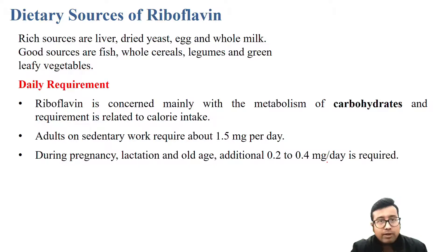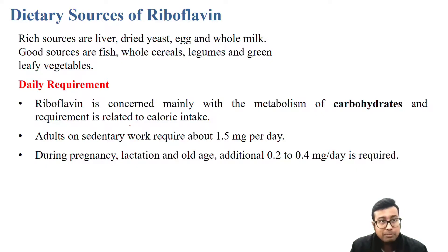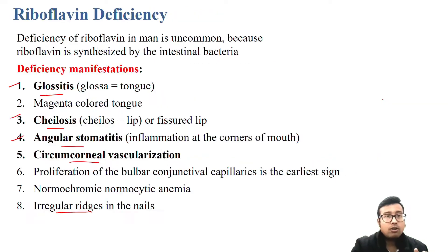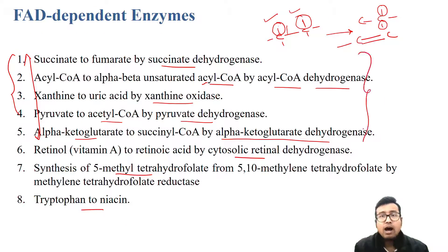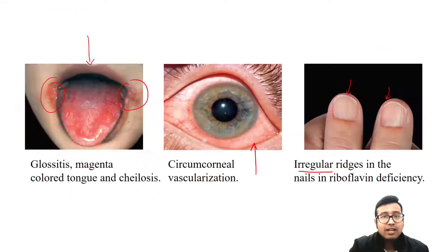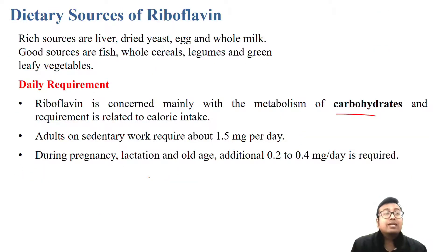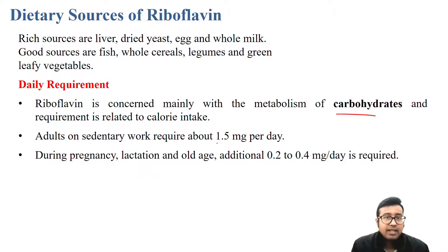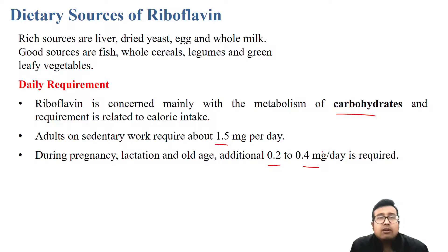Dietary sources of riboflavin include meat, fish, egg, liver, whole grains, legumes, and vegetables — essentially all common foods contain riboflavin. It is mainly concerned with carbohydrate metabolism, as the first five enzymes listed are primarily carbohydrate metabolism enzymes. If you take more carbohydrates in your diet, you need more riboflavin. The general requirement is 1.5 mg per day, and in pregnancy and lactation the requirement invariably increases.